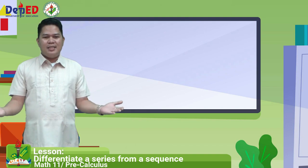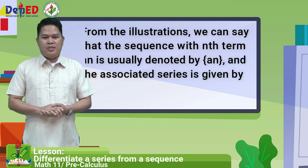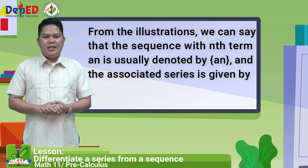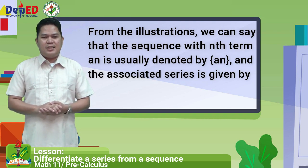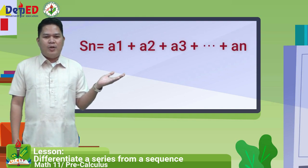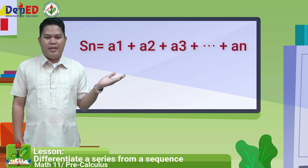It is easy, right? From the illustrations, we can say that the sequence with the n-th term a sub n is usually denoted by a sub n, and the associated series is given by a sub 1 plus a sub 2 plus a sub 3 plus dot dot dot plus a sub n.